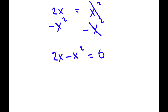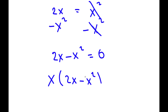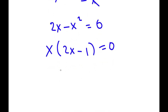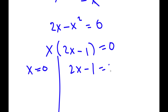From here I'm going to factor out x, so I have x times (2 minus x) is equal to zero. This gives me two equations: x is equal to zero, and 2x minus 1 is equal to zero.